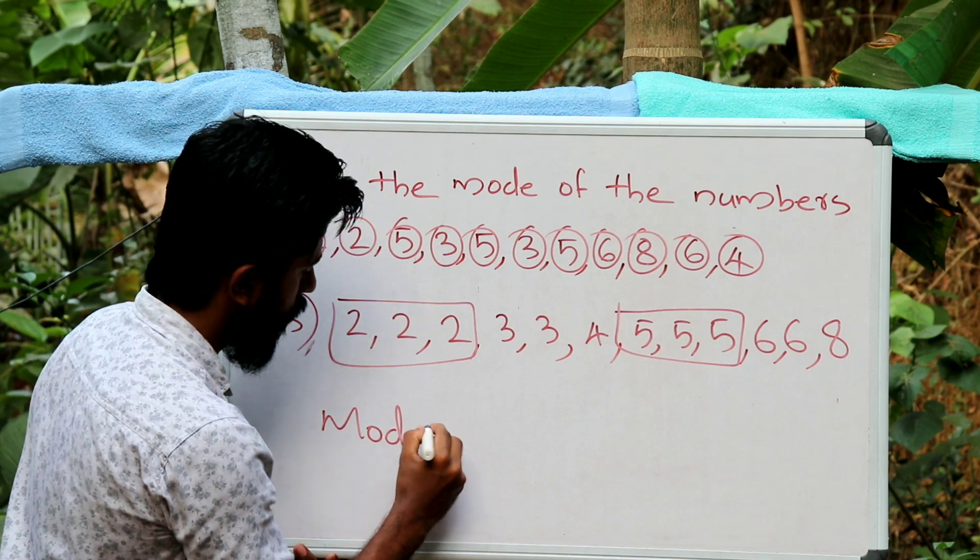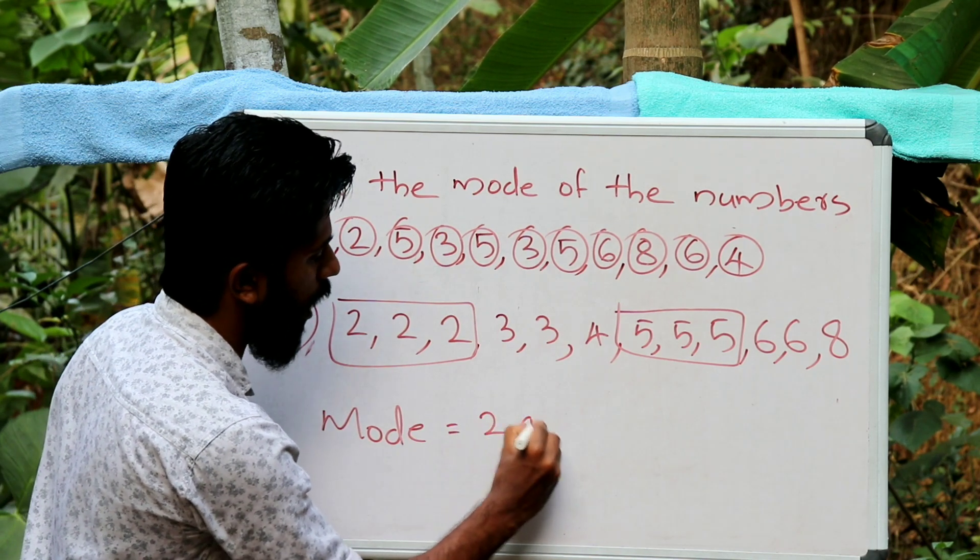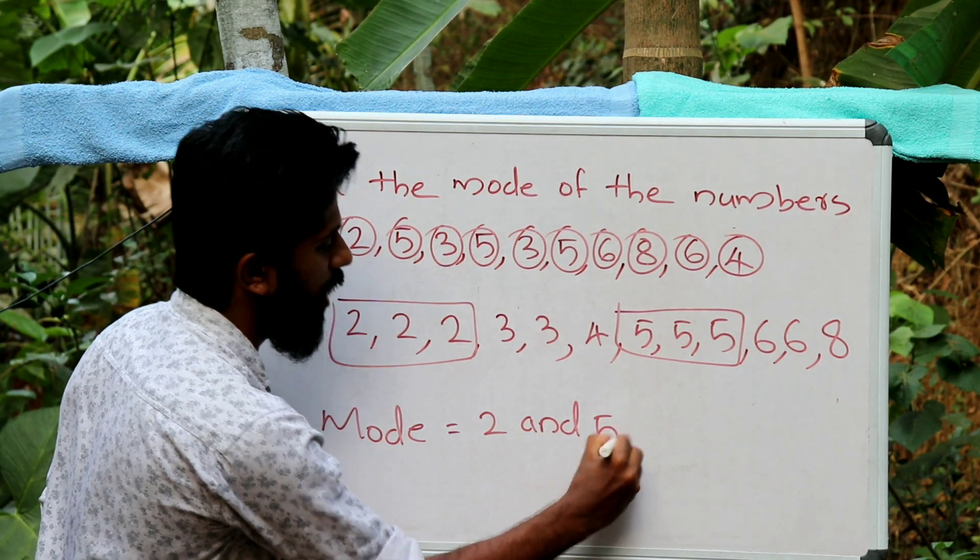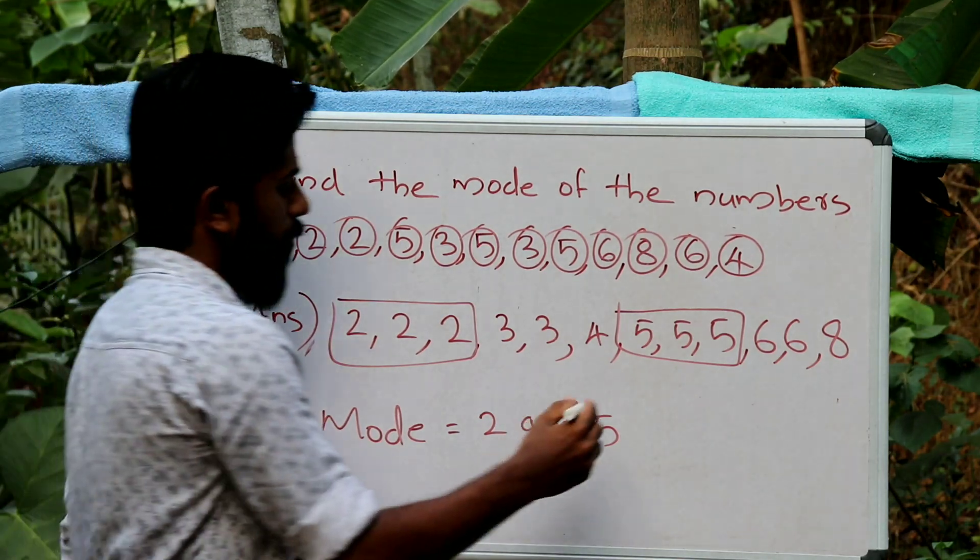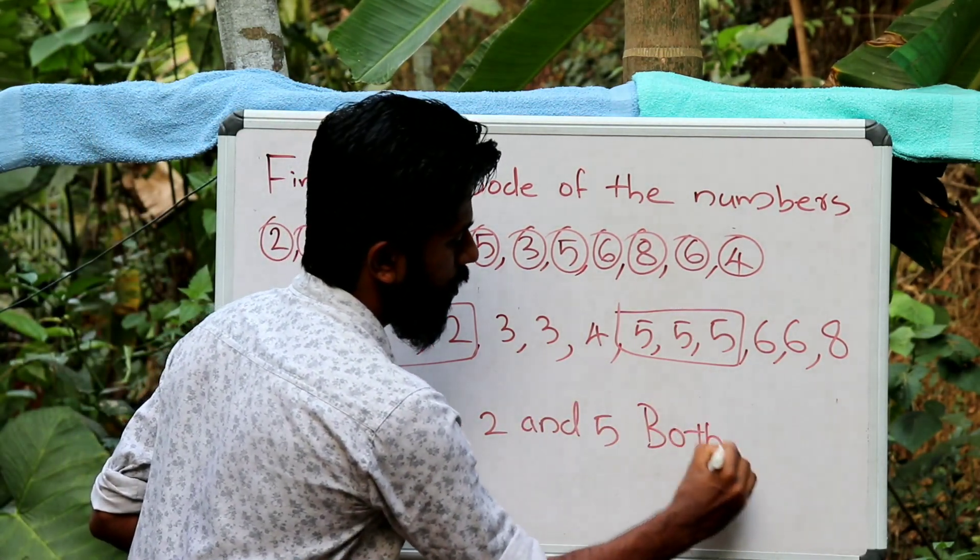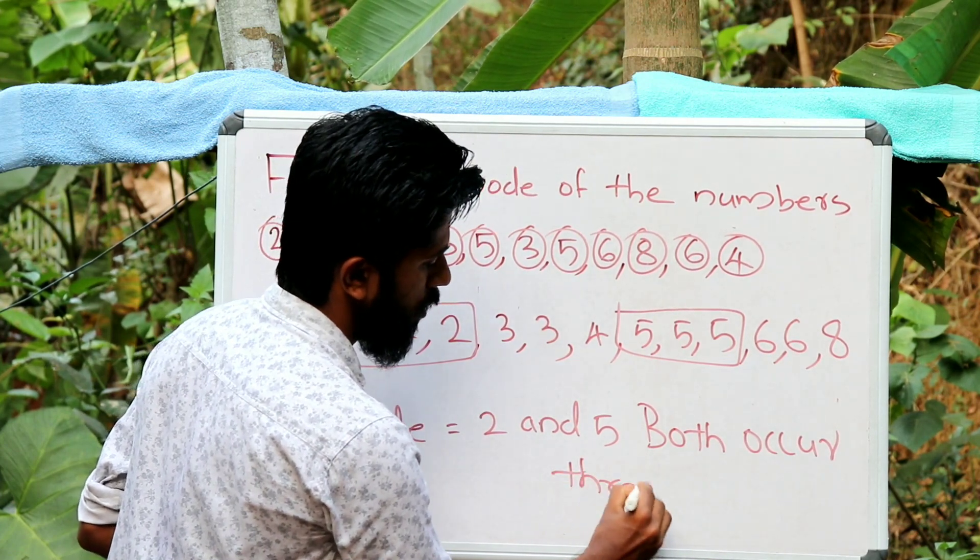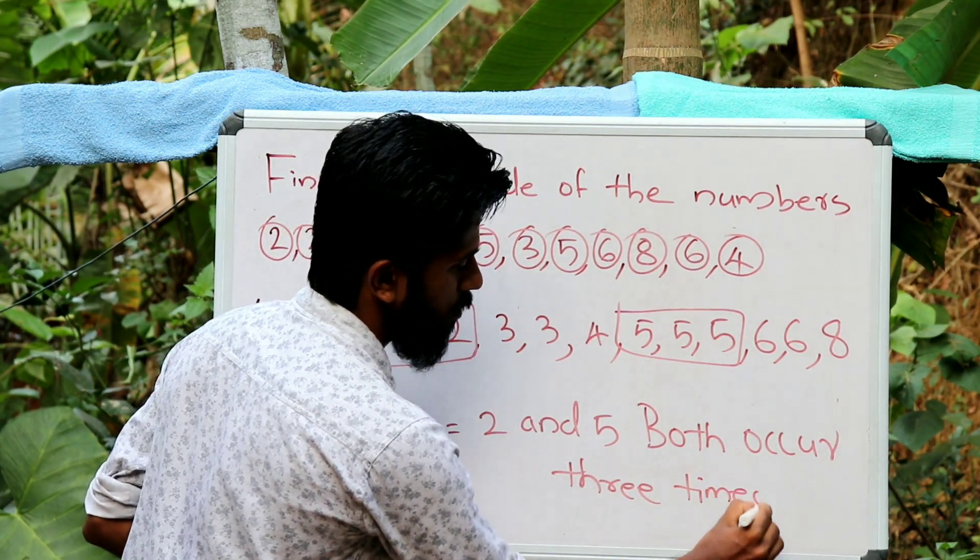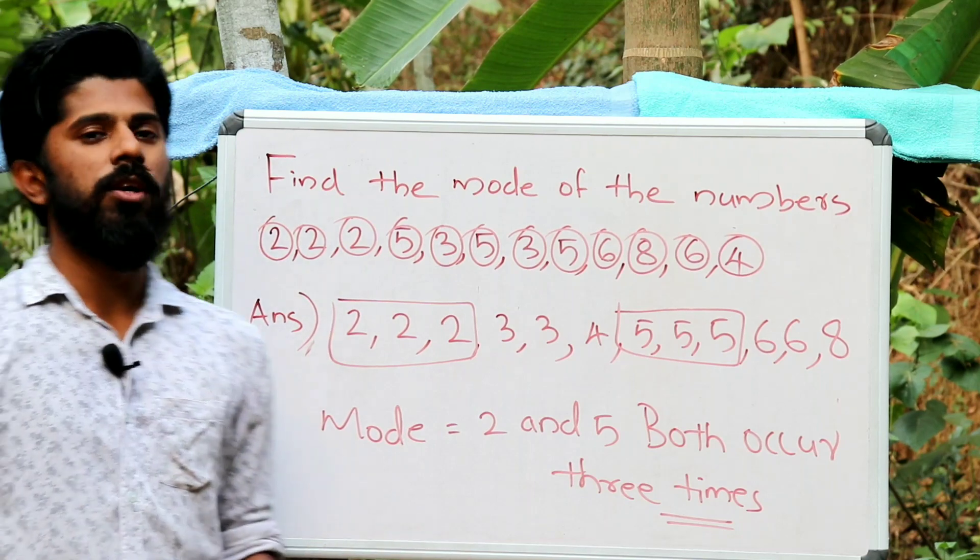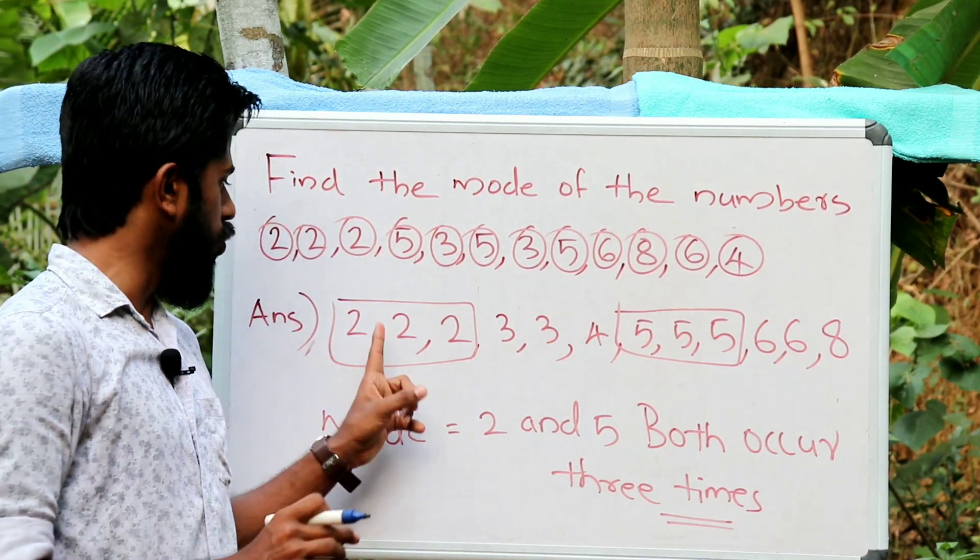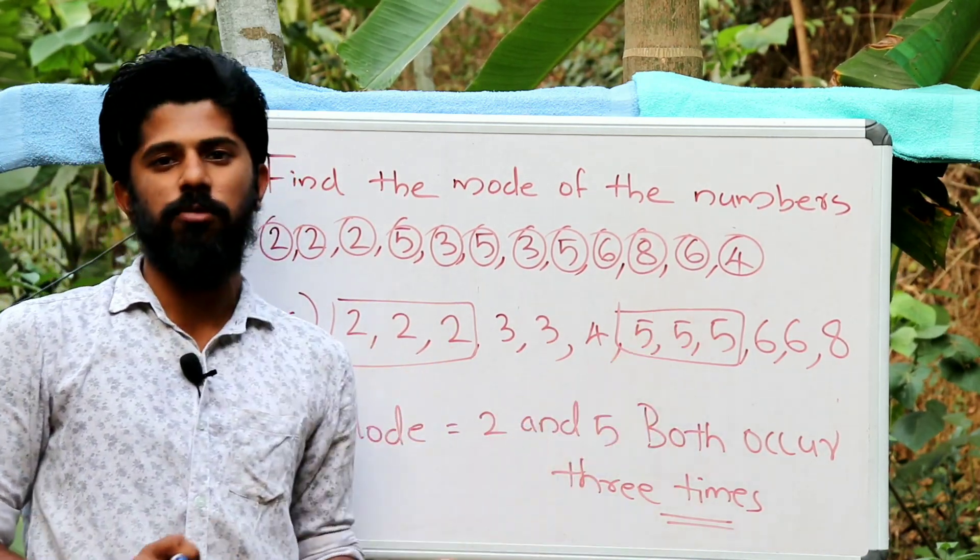Therefore, mode. What is that? Mode is equal to 2 and 5. 2 and 5. Because both occur 3 times. Both occur 3 times. 2 and 5, 3. You see, 5. Also, 2 and 5. You see, as well, the number is 3.